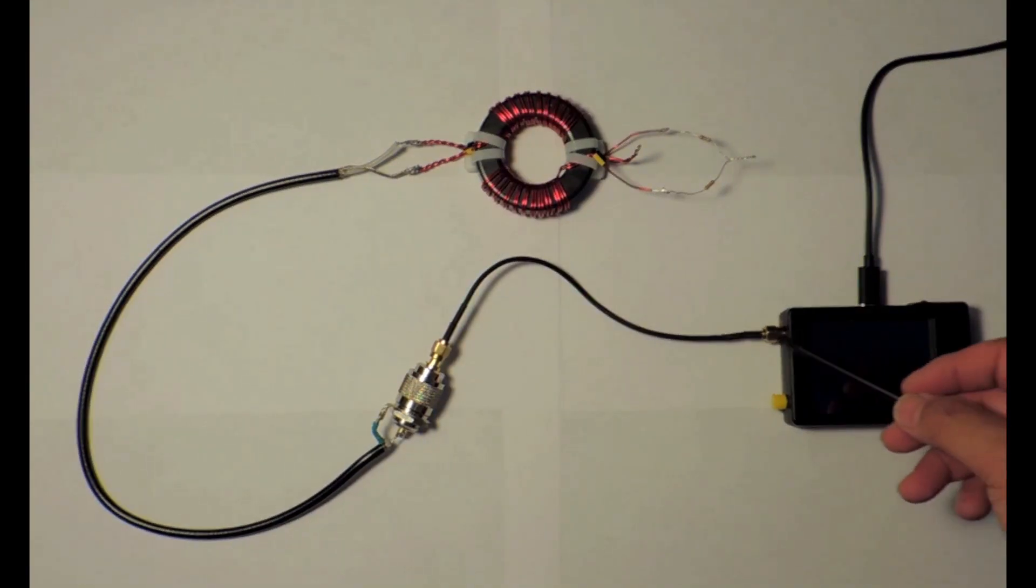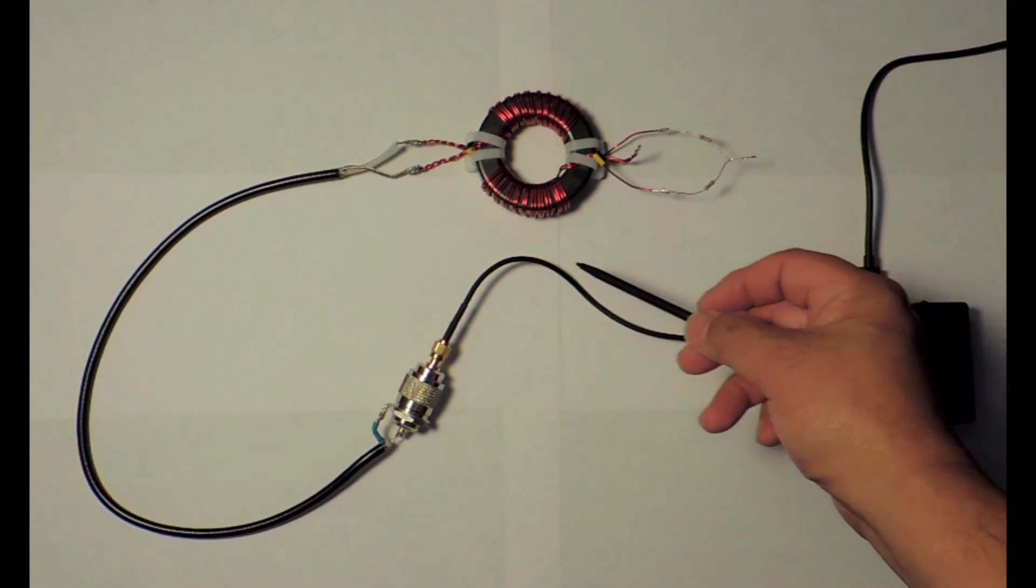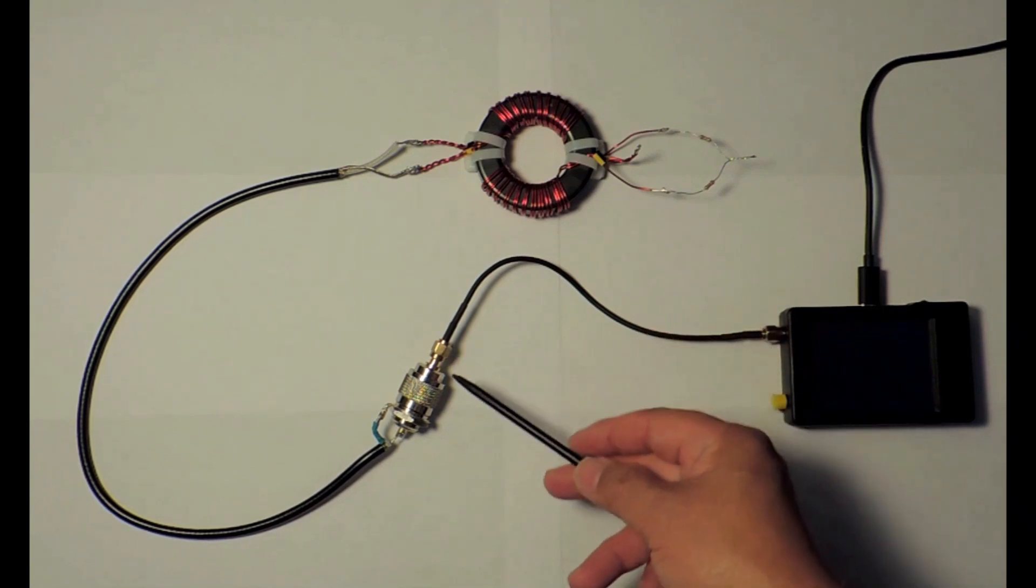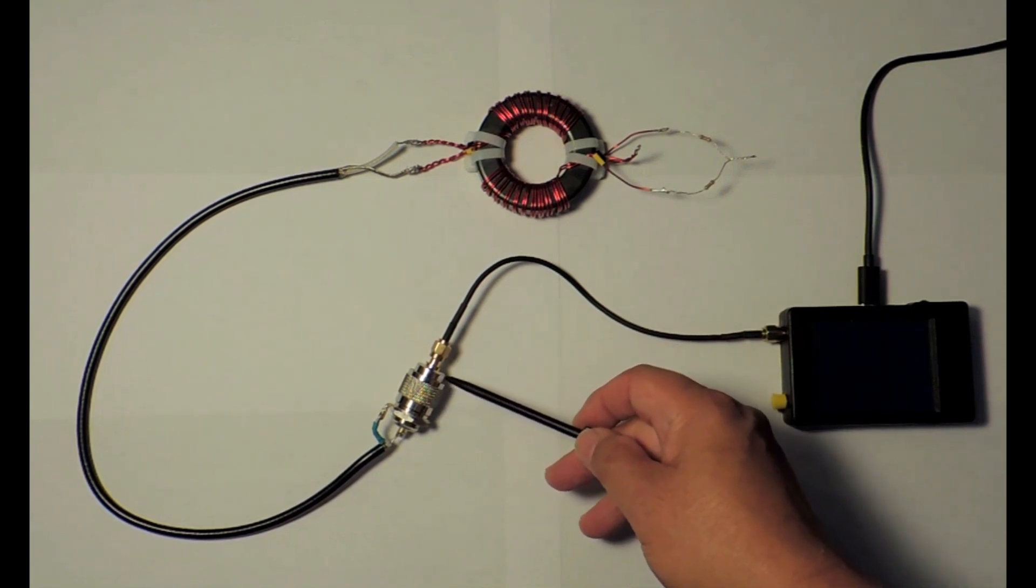Here is the Nano VNA connected to a test coaxial lead with SMA connectors. At the end of the SMA connector is a PL259 male connector mated to an SO239 female connector.